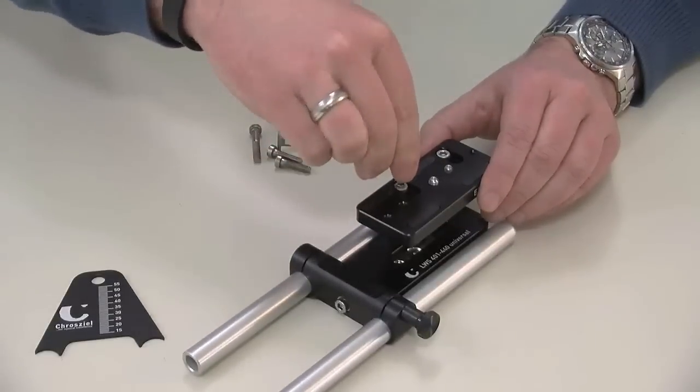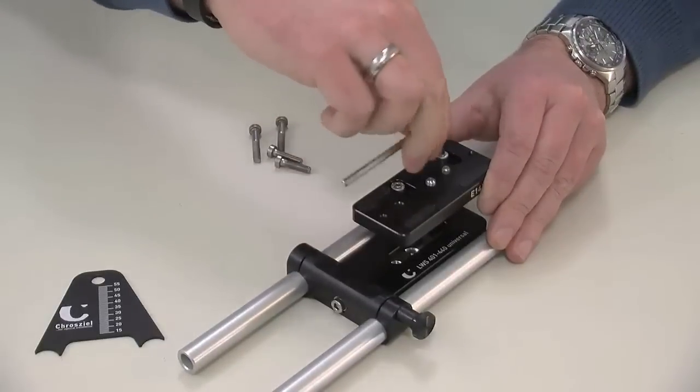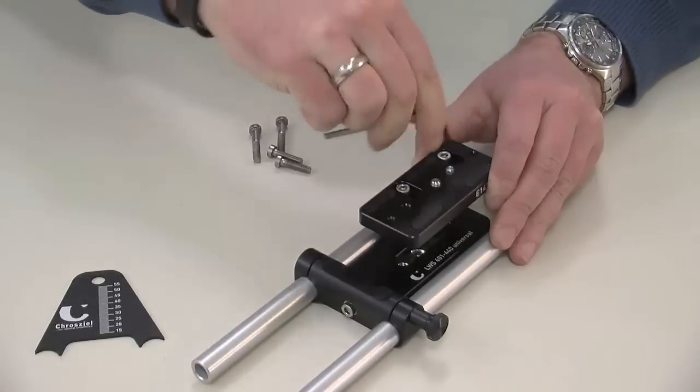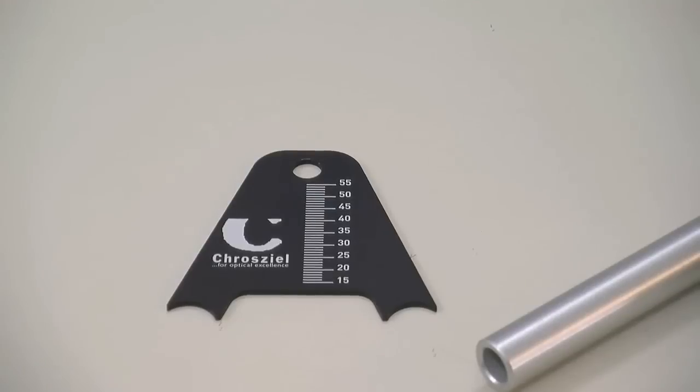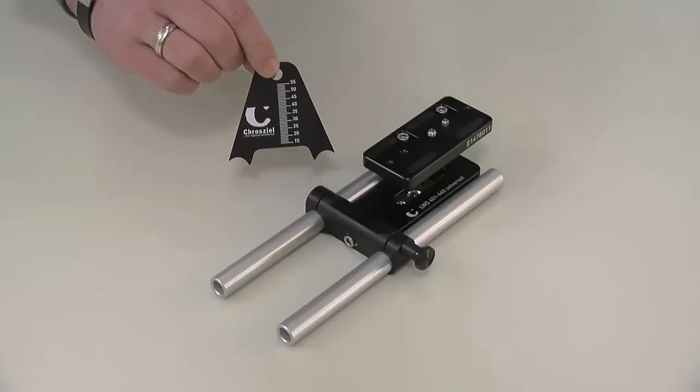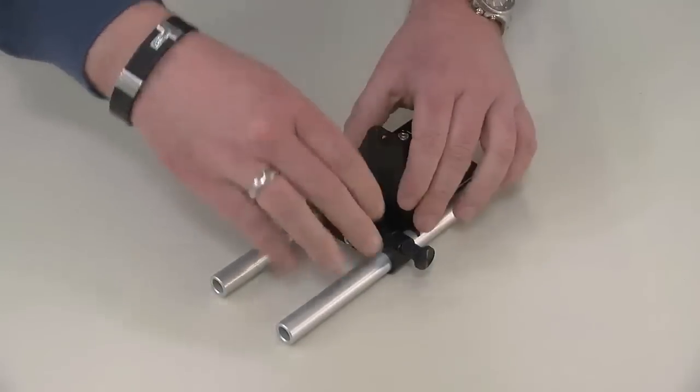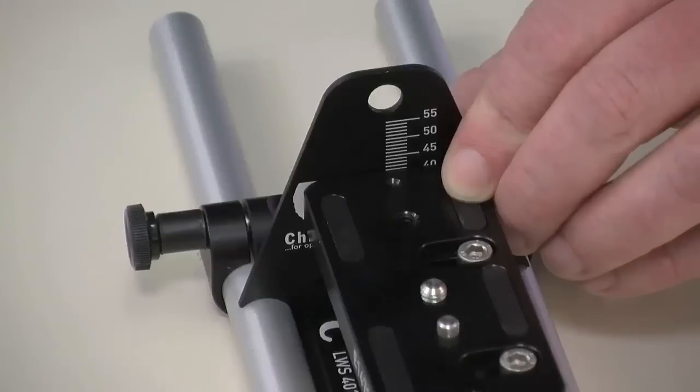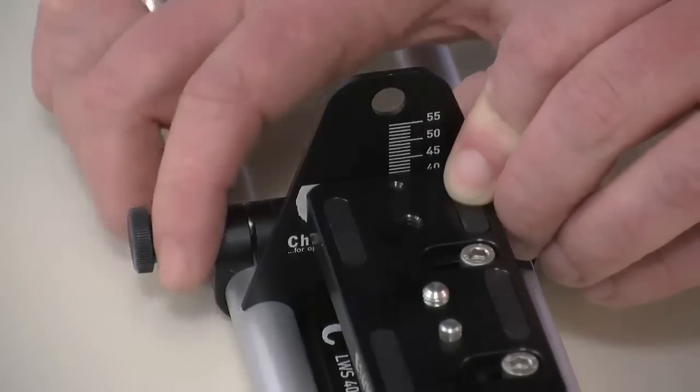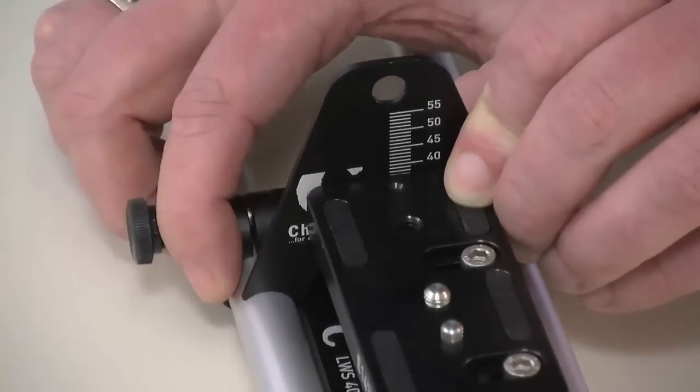Look at the black clamp holding the tubes. We will now loosen the screw you can see there in order to fine tune the height adjustment using our ruler. We move the middle element until the top of the base plate is perfectly aligned with the 40mm mark on the ruler.